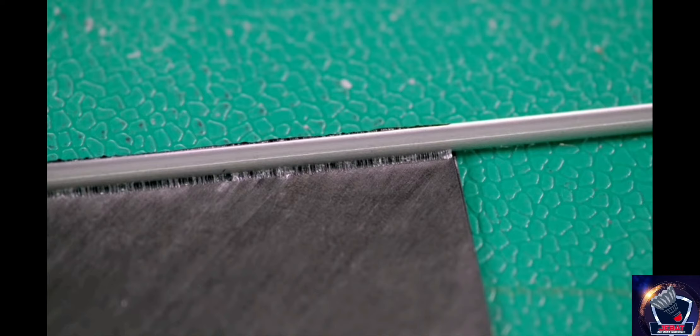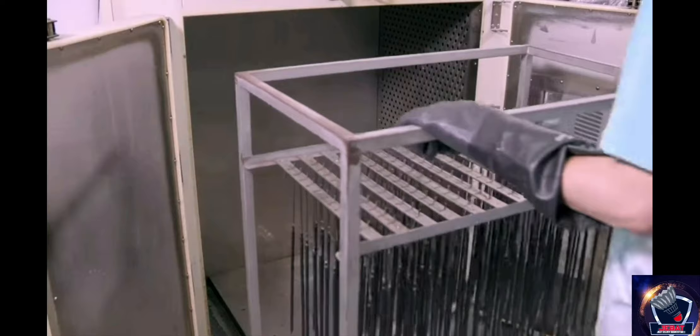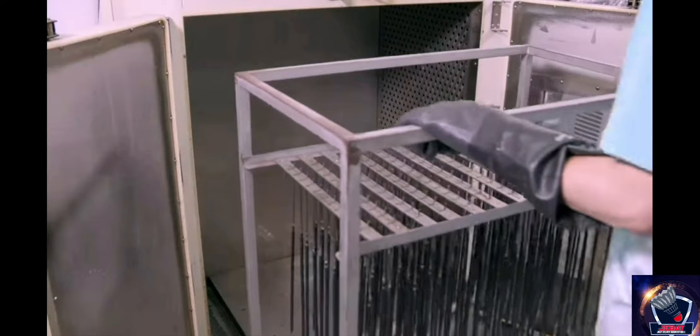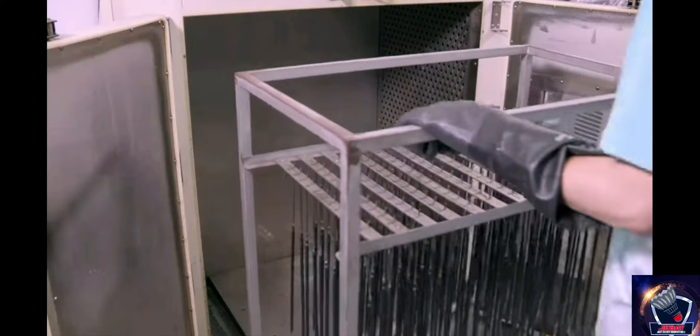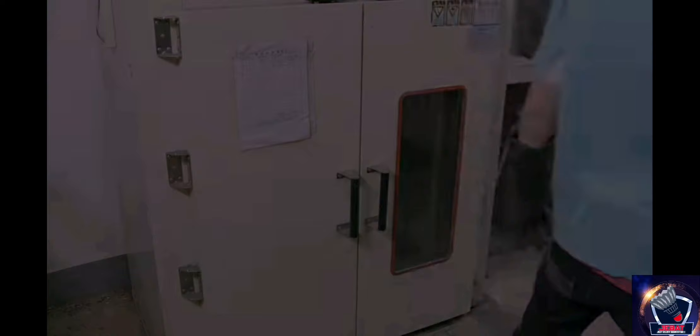The process begins by tightly wrapping a carbon fiber fabric called pre-preg multiple times around a metal cylinder. A worker encases the fabric in plastic to hold the pre-preg in place. Then he suspends the cylinders from a rack and rolls them into an oven.